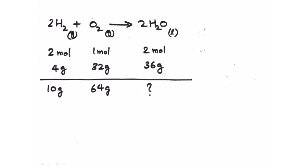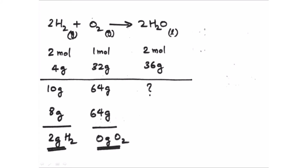We have 64 grams of oxygen. How much hydrogen is needed to react with 64 grams of oxygen? When we use 10 grams of hydrogen, the oxygen available is more than what is needed. Hydrogen is the limiting reagent; there is excess oxygen. 64 grams of oxygen reacts, but hydrogen at 10 grams is less than what oxygen can consume.